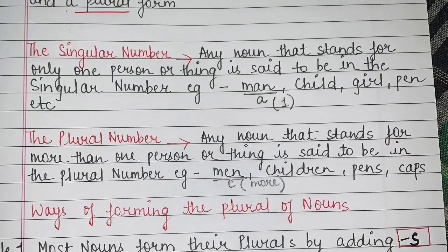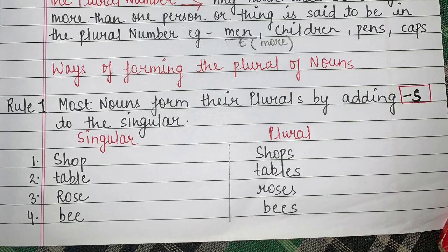Now that we understand singular and plural number, there are different ways of forming the plural of nouns. Let's start with rule number one. Rule number one says: most nouns form their plural by adding 's' to the singular. Examples: shop → shops, table → tables, rose → roses, bee → bees. Just by adding 's' at the end, these singular nouns change into plural.